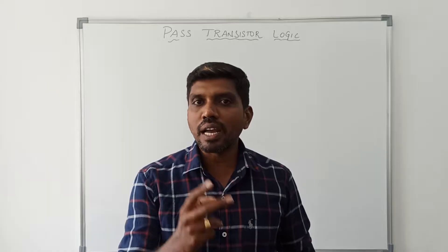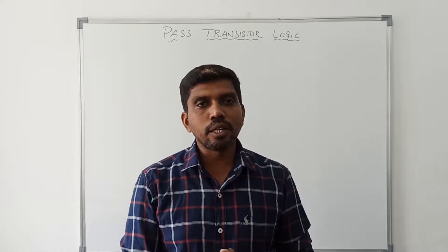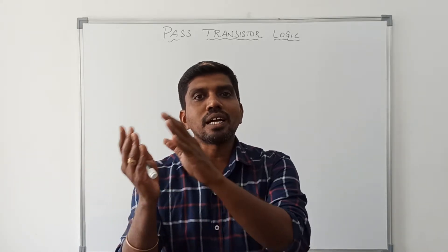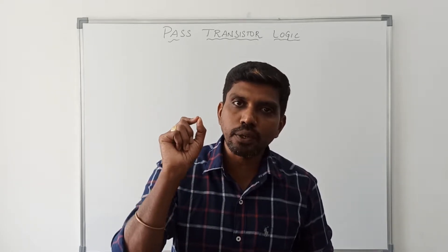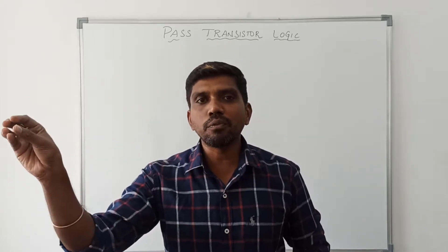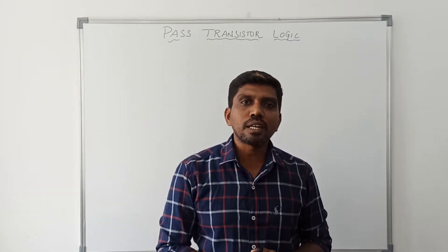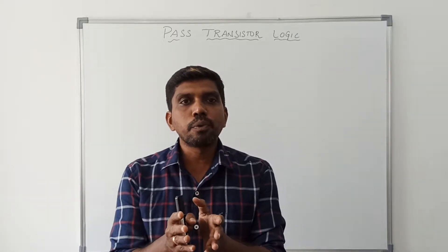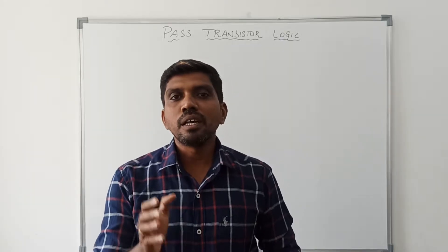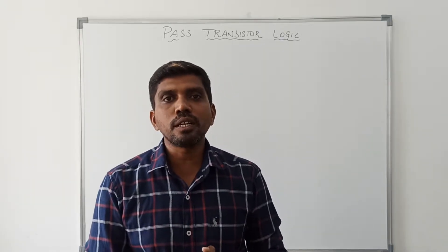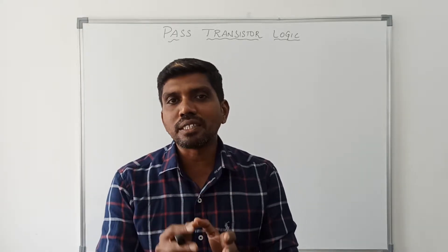So in this pass transistor, we have two input values. One is the primary input and another one is the controlling input. The input value is transferred to the output side based on the control signal. When the control signal value is equal to 1, the input value is transferred to the output side. In this pass transistor, the primary input is driven at the gate terminal and also driven on the source terminal. But in complementary CMOS logic, the primary input only drives through the gate terminal. So that is a major difference.